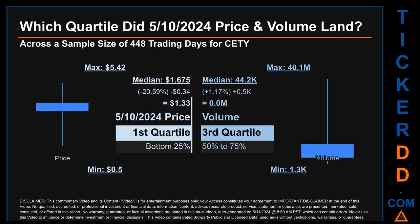Hello, my name is Maria. Which quartile did the 10th of May 2024 price and volume land in, across a sample size of 448 trading days? The maximum end-of-day price for CETY was $5.42 while the minimum was 50 cents. Within that price range, the 10th of May 2024 price of $1.33 landed within the first quartile, meaning it was within the bottom 25% of all sampled end-of-day prices.